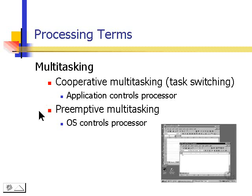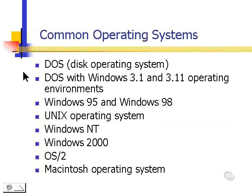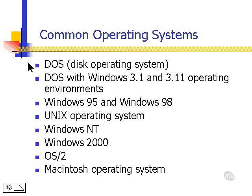Now we use preemptive multitasking, where the operating system itself controls the processor. Common operating systems that we use are DOS, one of the first operating systems, called disk operating system, and DOS with Windows 3.1 and 3.1.1 operating environments.